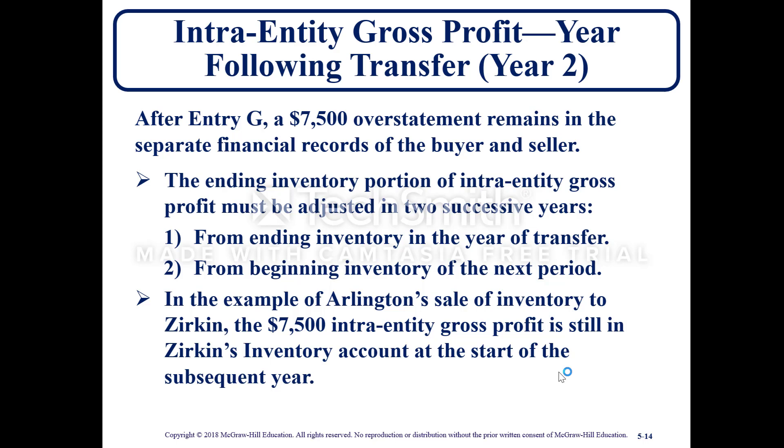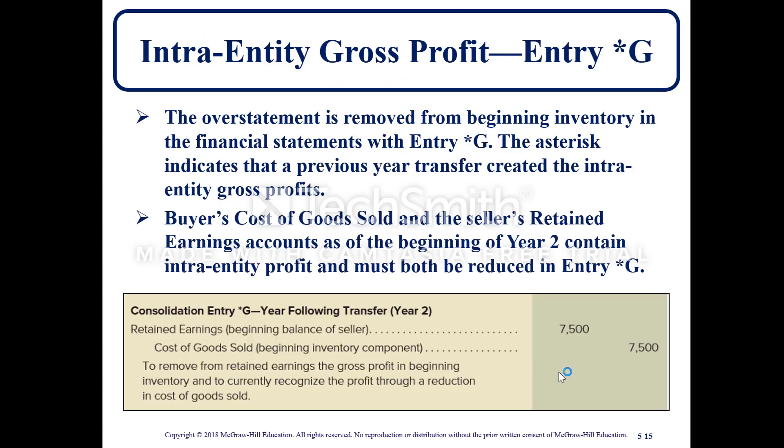In the example of Arlington's sale of inventory to Zerkin, the $7,500 intra-entity gross profit is still in Zerkin's inventory account at the start of the subsequent year. The overstatement is removed from beginning inventory in the financial statements with entry *G. The asterisk indicates that a previous year transfer created the intra-entity gross profit. The buyer's cost of goods sold and the seller's retained earnings account at the beginning of year 2 contain the intra-entity profit and must be reduced in entry *G.